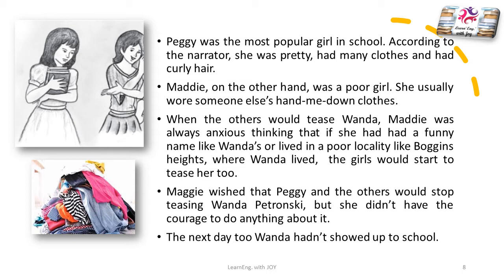When the others would tease Wanda, Maddie was always anxious, thinking that if she had a funny name like Wanda's, or lived in a poor locality like Boggins Heights where Wanda lived, the girls would start to tease her too. Maddie wished that Peggy and the others would stop teasing Wanda Petronsky, but she didn't have the courage to do anything about it.